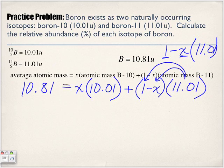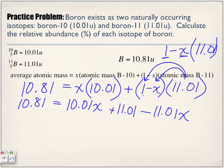So what I have here is 10.81 equals x times 10.01, which is 10.01x, plus 11.01 times 1, which is 11.01, minus 11.01 times x, which is minus 11.01x.